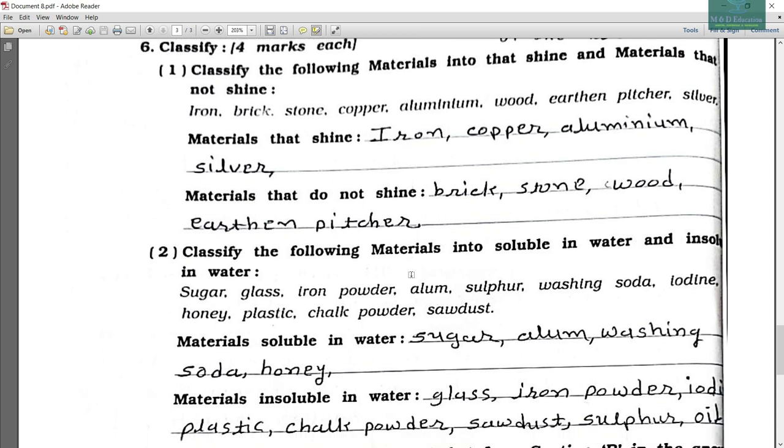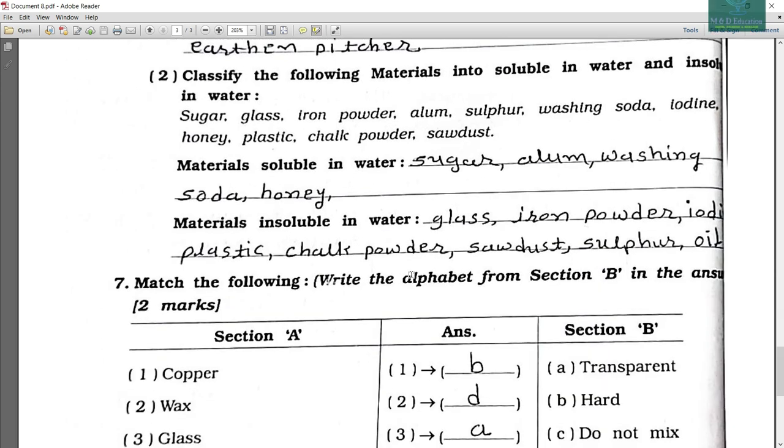Now second one is classify the following materials into soluble in water and insoluble in water. Materials soluble in water: sugar, alum, washing soda and honey. Materials insoluble in water: glass, iron powder, iodine, plastic, chalk powder, sawdust and sulfur oil.